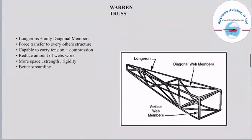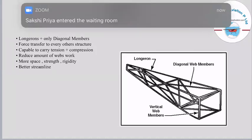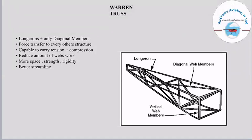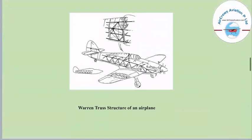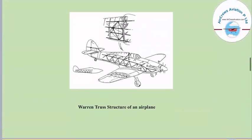The Warren truss uses longerons plus only diagonal members, and forces are transferred to every other structure. It is capable of carrying both tension and compression. The Warren truss reduces the amount of framework, provides more space, strength, and rigidity, and offers better streamlining. Here is a picture showing the Warren truss structure of an airplane.